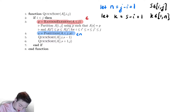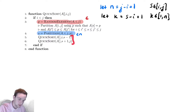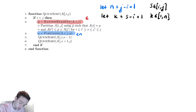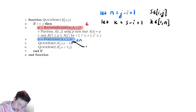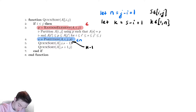Nothing else changed in this code. So I don't need to recompute those sizes — I already know what they are from my previous code. The size of the first recursive call is k minus 1, and the size of the second recursive call is n minus k.